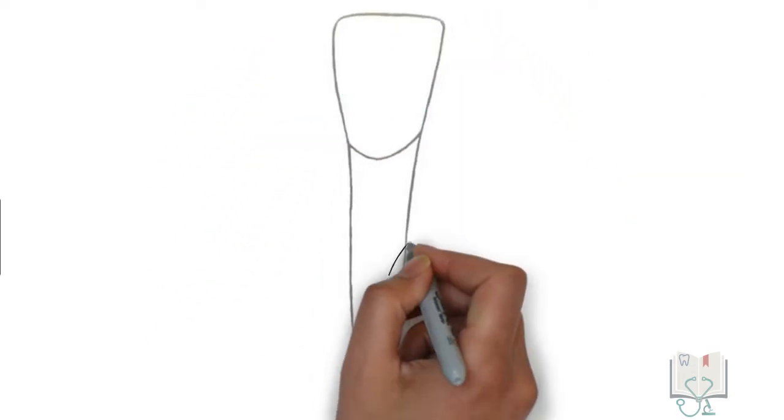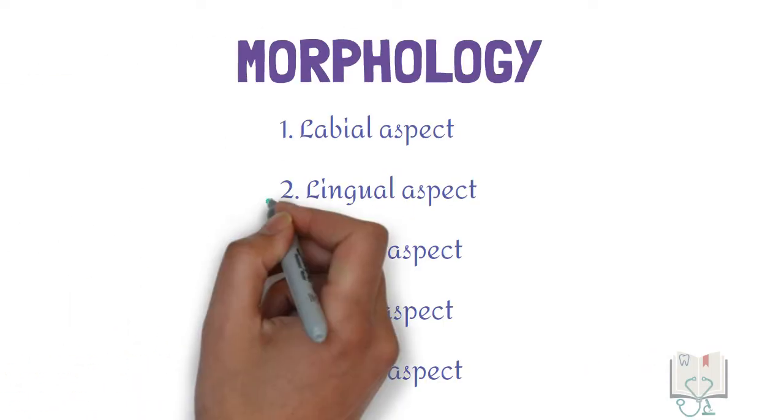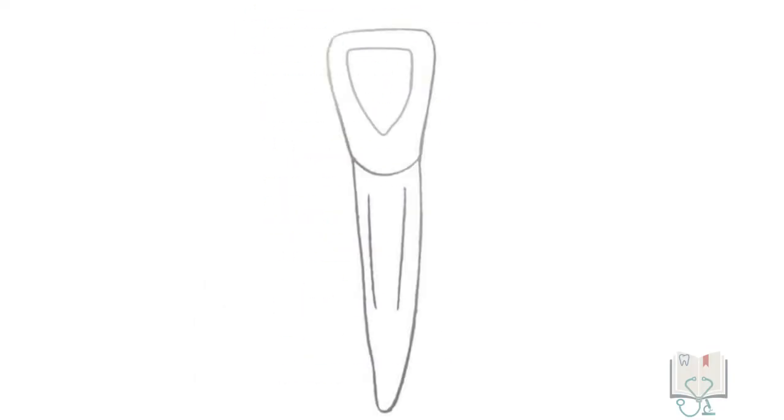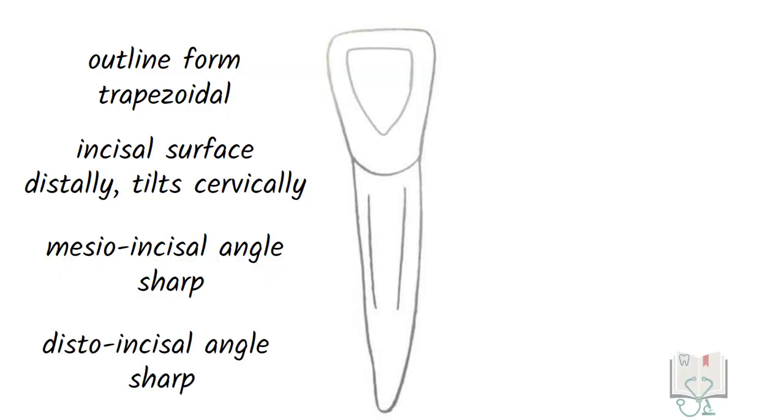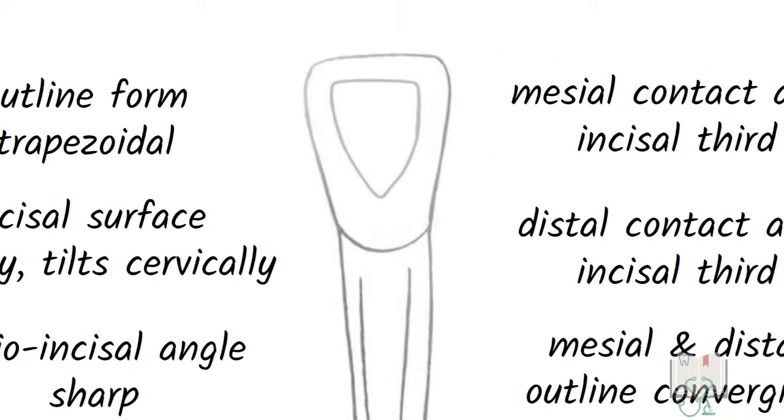The root is smooth, conical and tapering, and the apex usually has a distal tilt. Coming to the lingual aspect, as the lingual aspect is narrower than the labial aspect, all features of the outline form from the labial aspect remain the same in the lingual aspect as well, although the crown surface is very different.